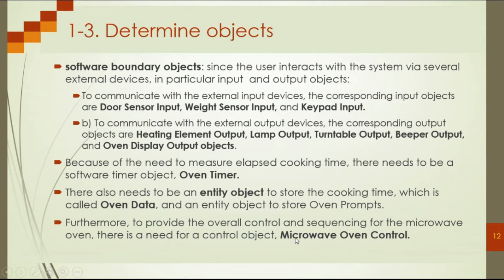The control objects are given on state charts, so we consider these state charts — the interaction model — as state-dependent charts. This is the first step. To summarize, the first three steps are: determine the boundary objects, the state-dependent control objects, and any other objects.